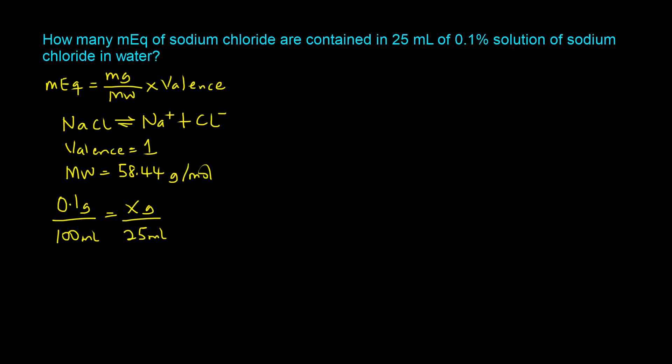And we want to find out how many grams is actually present in 25 milliliters. So we can go ahead and solve for x, which is our unknown. So x equals 0.1 grams times 25 milliliters divided by 100 milliliters.